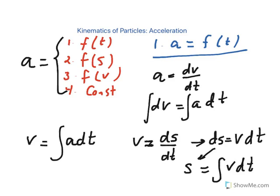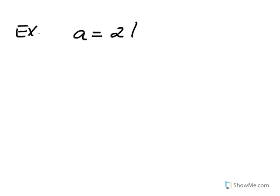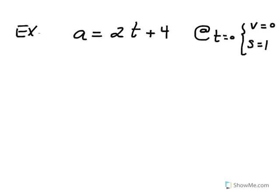Here's an example. Let's say acceleration is given as a simple function of time: a equals 2t plus 4. We're told that at t equals 0, the initial velocity is 0, and the object starts at a position of 1 inch. Time is in seconds and position is in inches. Our objective is to find velocity and position as functions of time.